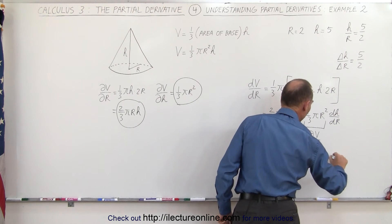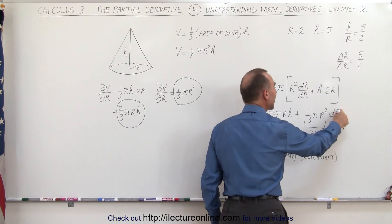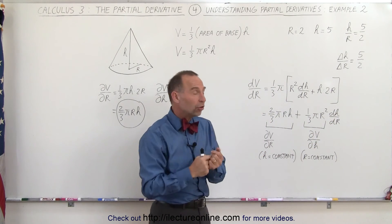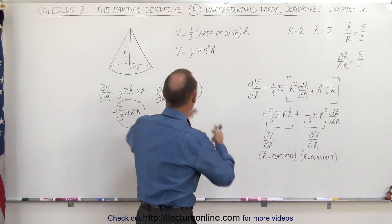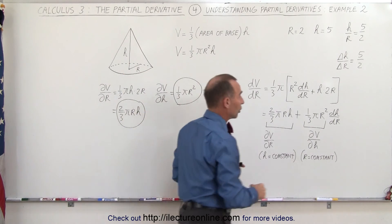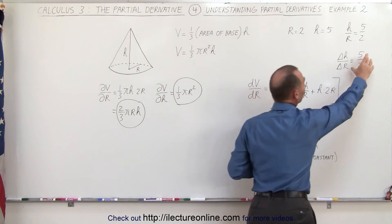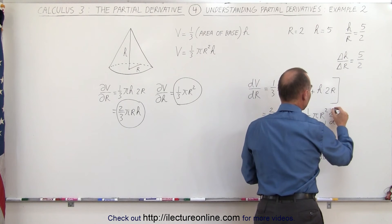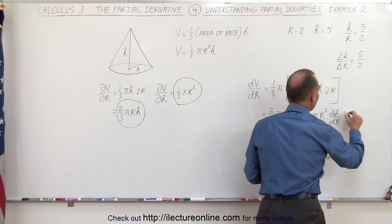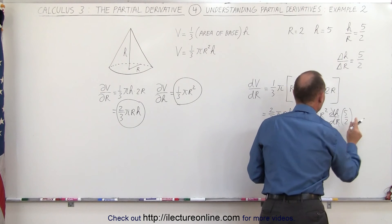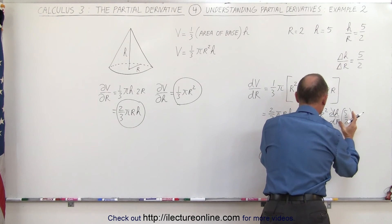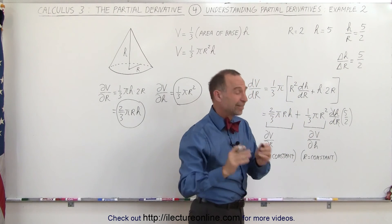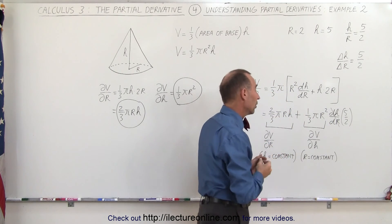We also need to multiply that second term by dh/dr, which is basically how much h changes as r changes. Since we presume the ratios of the right circular cone stay the same, dh/dr is equal to 5 over 2. Replacing dh/dr with 5 over 2, this portion then represents how the volume changes as h changes — so it's not exactly equal to the partial derivative anymore.